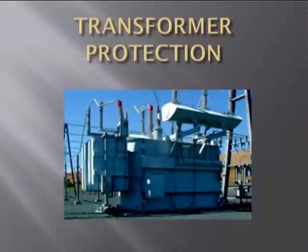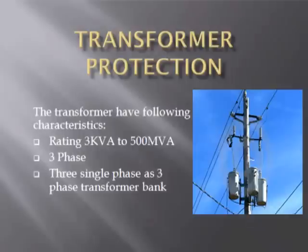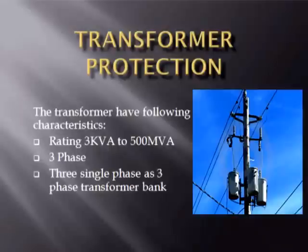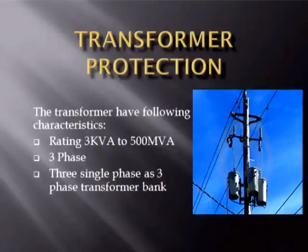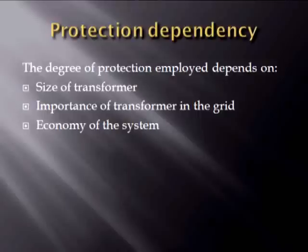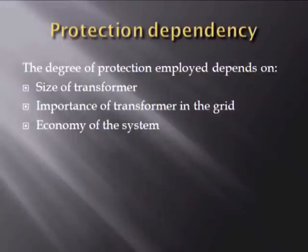Now we will talk about transformer protection. The transformers used in the system have a rating of 3 kVA to 500 MVA and they can be three-phase or can be three single-phase transformers connected as three-phase transformer banks. These transformers are connected in delta or Y connection schemes according to the required voltage or current levels. Y-delta transformers have a phase difference of 30 degrees according to IEEE standards. The degree of protection employed for a particular transformer depends upon its size, its importance in the system, and the economy of the design. Sometimes circuit breakers are omitted to make the design less expensive, but appropriate amendments must be made to the design for protection.